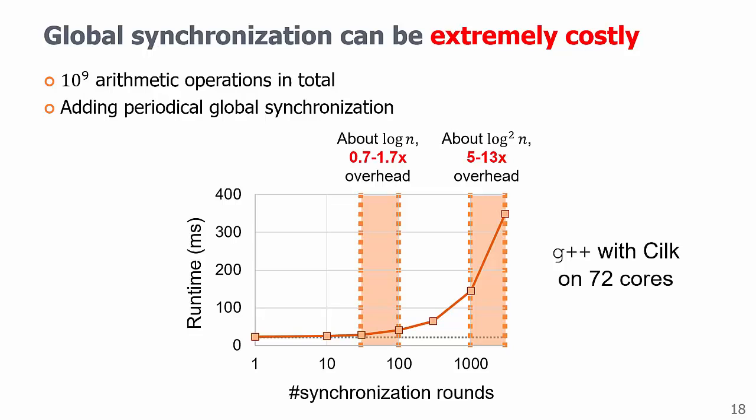I run a billion arithmetic operations in parallel, and in between, I add some global synchronization. And as you can see, when the synchronization rounds exist about 100, the overhead starts to dominate. This overhead can be significant in practice, even if we only synchronize for log n or log square n rounds.